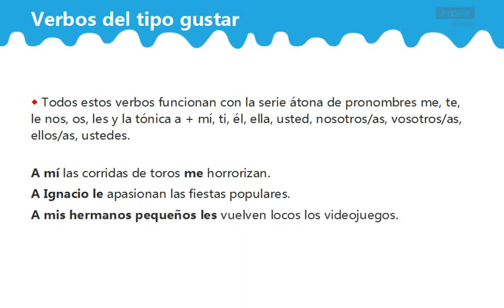我们再看两句：A mis hermanos pequeños les vuelven locos los videojuegos. 意思是弟弟妹妹们非常喜欢电子游戏。这里 les 肯定是 a mis hermanos pequeños；vuelven 为什么是复数？因为主语是 los videojuegos。locos 是阳性复数，因为它修饰的是 mis hermanos pequeños。如果某个女的很喜欢那部电影，就说：Le vuelve loca aquella película。